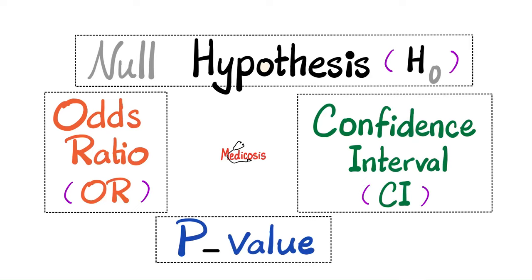What is going on, wonderful people? It's Medicosis Perfectionarius, where medicine makes perfect sense. Welcome back to my statistics playlist. In previous videos, we talked about the measure of central tendency — the mean, the median, and the mode.